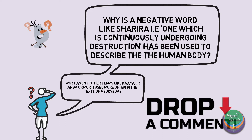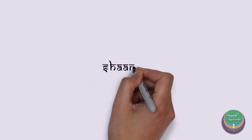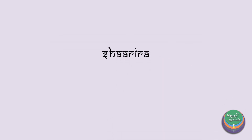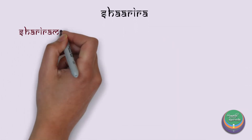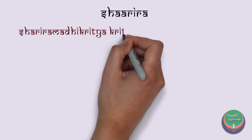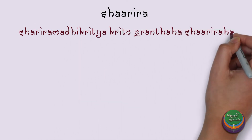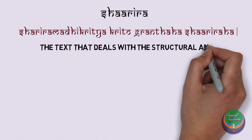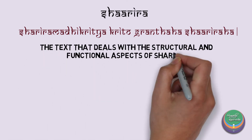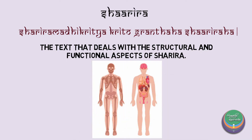Let us now talk about the term used for the study of Sharira, that is, Sharira Sthana. Acharya Arunadatta has described Sharira as: Sharira madhikritya krito — which means the text that deals with the complete knowledge of Sharira, that is, both the structural and functional aspects.